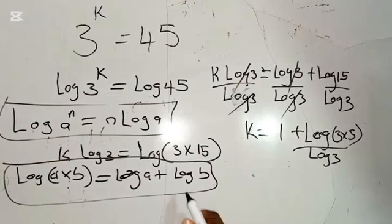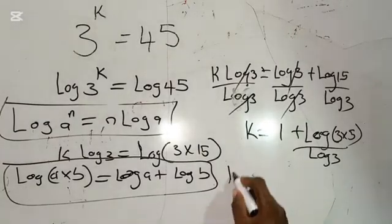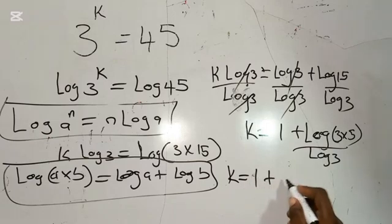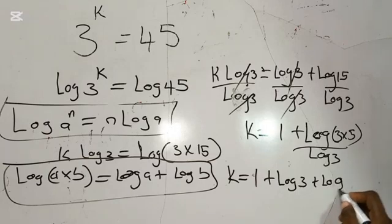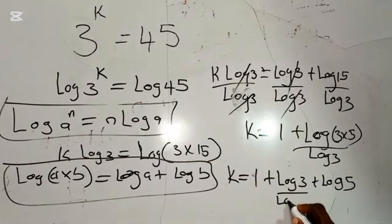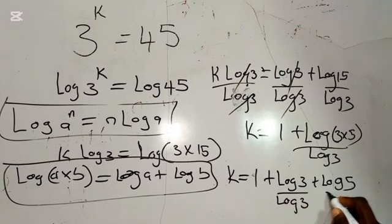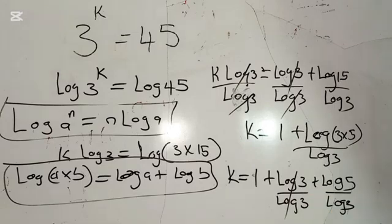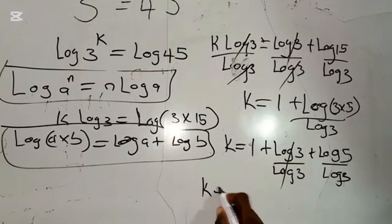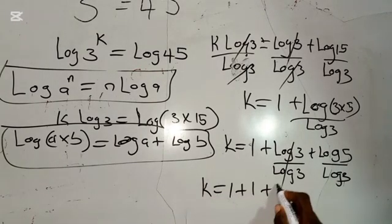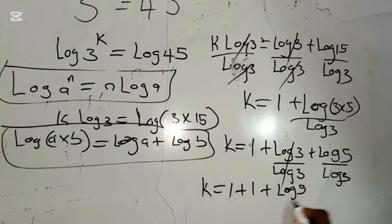So still using this property, we are going to have k is equal to log 3 plus log 5, here divided by log 3, and also here divided by log 3. So this also cancels each other. Therefore, we are going to have k is equal to 1 plus 1 plus log 5 divided by log 3.